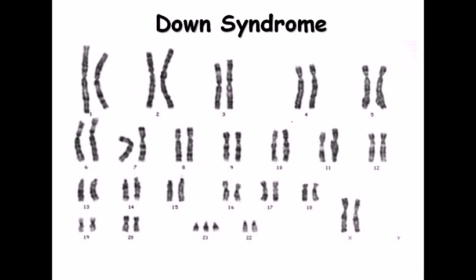Now let's look at some chromosomal aberrations and how we can detect them through karyotyping. In Down syndrome, there is an extra chromosome at the 21st position — a trisomy. This extra chromosome changes the karyotype, alters the behavior and phenotype of the offspring, and can lead to serious effects. Down syndrome is a type of autosomal aberration, occurring in chromosomes 1 through 22.